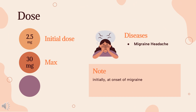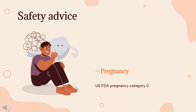Dose. Migraine: indicated for acute treatment of migraine with or without aura. 2.5 mg PO or intranasally initially at onset of migraine. Dosing considerations: may increase dose to 5 mg, not to exceed 5 mg per single dose; individual response varies. May repeat dose if migraine has not resolved after 2 hours, not to exceed 10 mg per 24 hours. Safety not established for tablets in the treatment of more than 3 migraines per 30 days, or 4 migraines per 30 days for the intranasal formulation.